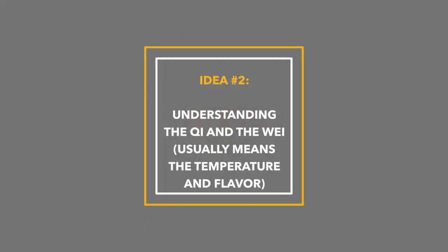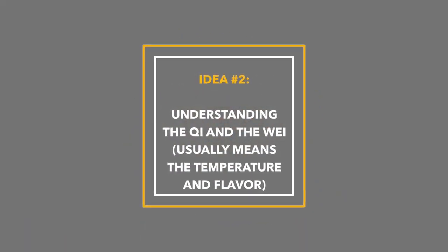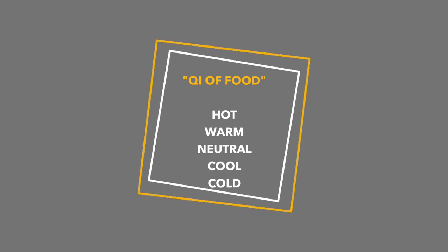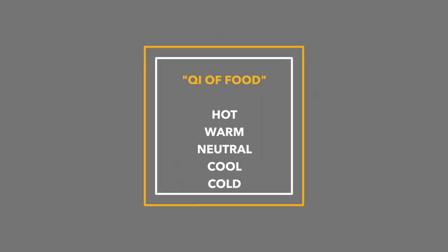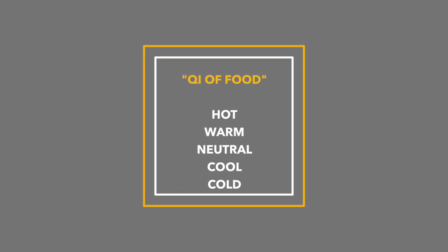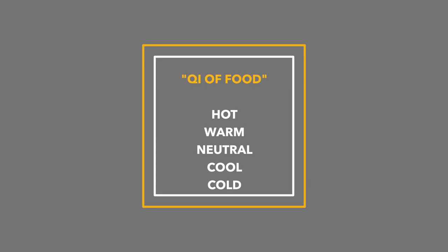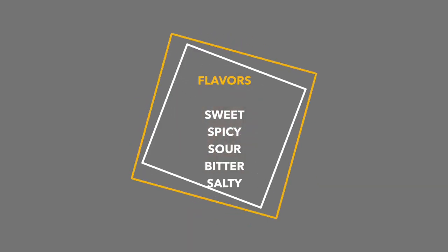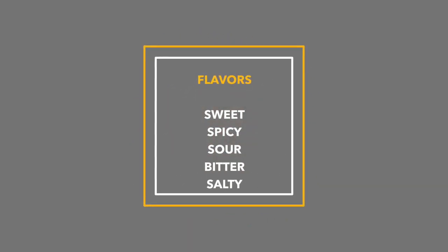The first concept is understanding the energetics of food — the qi and the flavor. The qi is typically the temperature of the food, and the flavor refers to the five flavors we just talked about. The qi could be hot, warm, neutral, cool, or cold. And the flavors are typically sweet, spicy, sour, bitter, and salty.